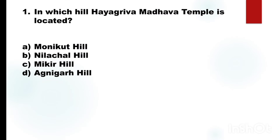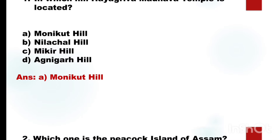In which hill is Hagripa Madaba Temple located? The answer option is E: Monecote Hill. The question asks where Howie Grippe Madhav Mandir is situated, and the correct answer is Monecote Hill.